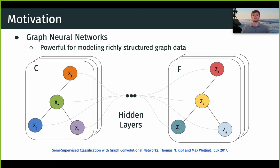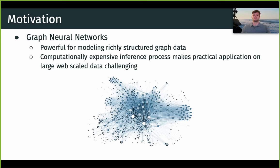Now as many of us are aware, graph neural networks are incredibly powerful architectures for modeling richly structured graph data, and they're applicable for a range of applications from data mining on the web to social network analysis. But a practical challenge for GNNs is their computationally expensive inference process that scales with the size of the input graph. This makes training GNNs for tasks on web-scaled data difficult.